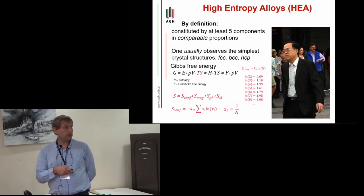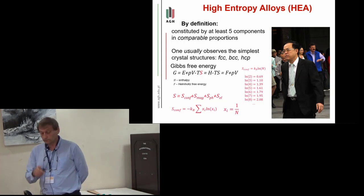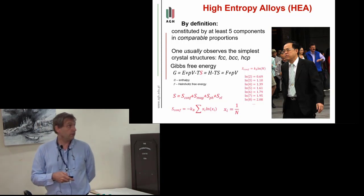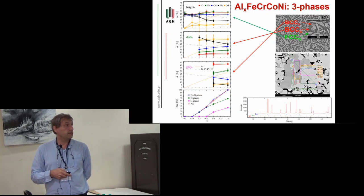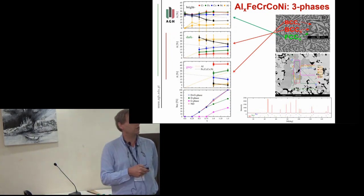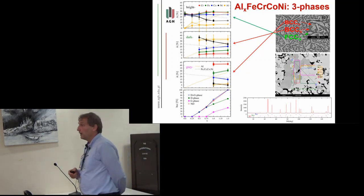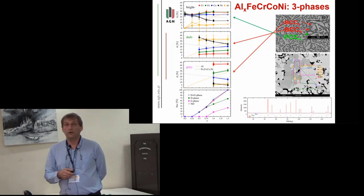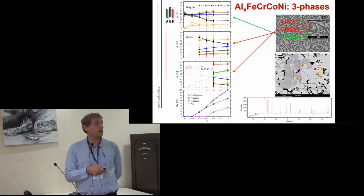We have analyzed high-entropy alloys based on the core of iron-chromium-cobalt-nickel with some admixture of aluminum. It is well known that when you increase aluminum content, the simple structure is changing. We start from the phase which is FCC phase.